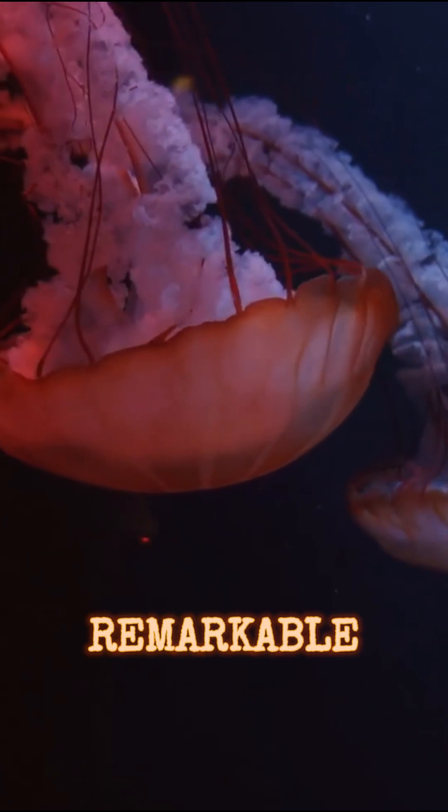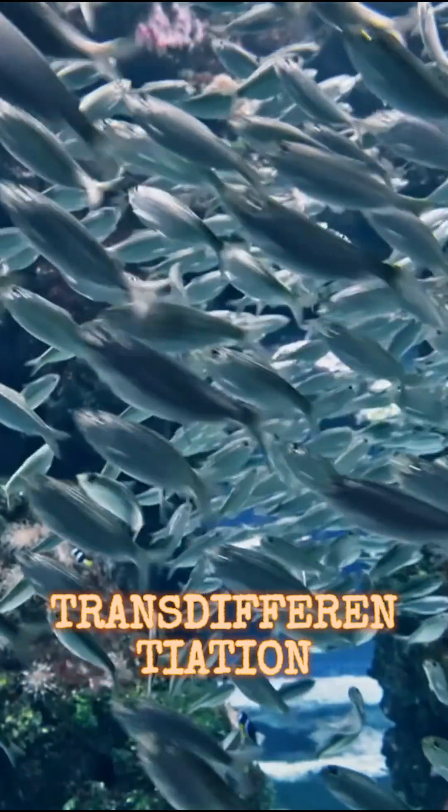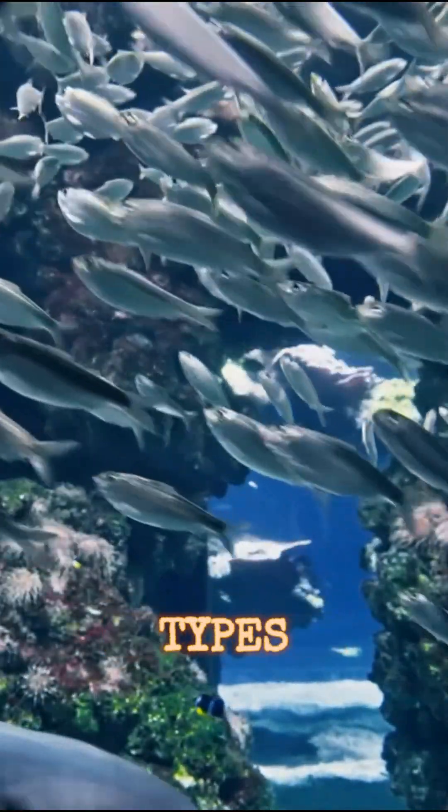Scientists call it biologically immortal, meaning it doesn't die from old age like most creatures. It achieves this remarkable feat through a process called transdifferentiation, where its cells change into different types.